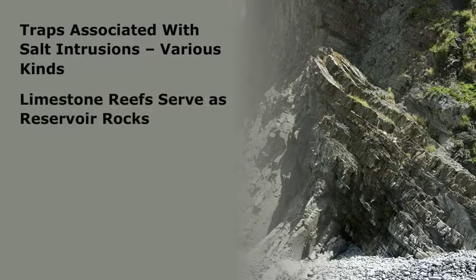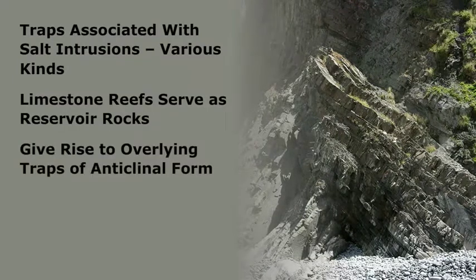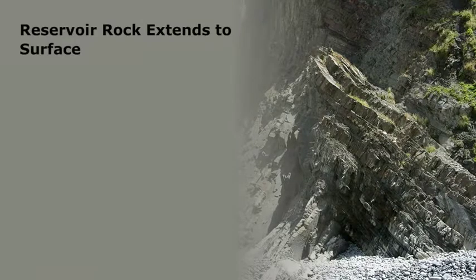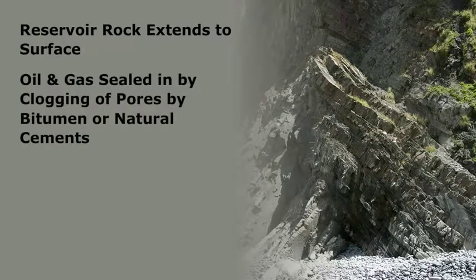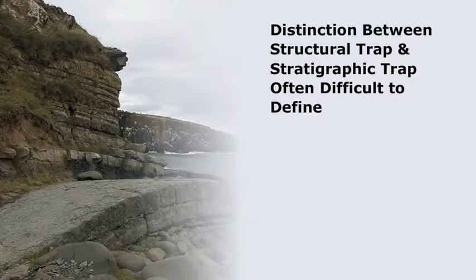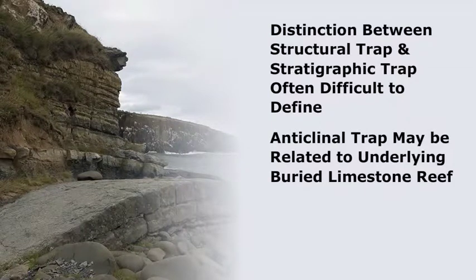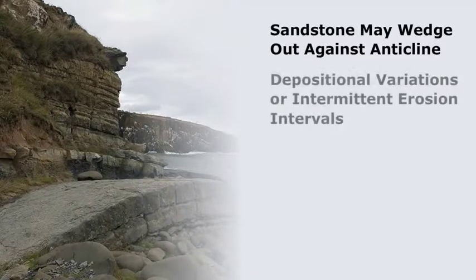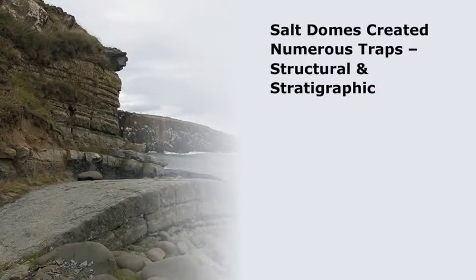There are also examples in which the reservoir rock extends to the surface of the Earth, but oil and gas are sealed in by clogging of the pores by bitumen or by natural cements. Many reservoirs display more than one of the factors contributing to the entrapment of hydrocarbons. The distinction between a structural trap and a stratigraphic trap is often difficult to define. For example, an anticlinal trap may be related to an underlying buried limestone reef, and beds of sandstone may wedge out against an anticline due to depositional variations or intermittent erosion intervals. Salt domes, formed by flow of salt at substantial depths, have also created numerous traps that are both structural and stratigraphic.